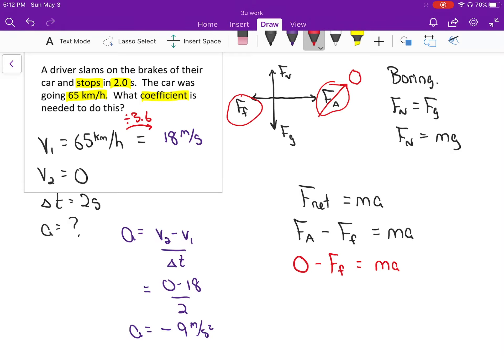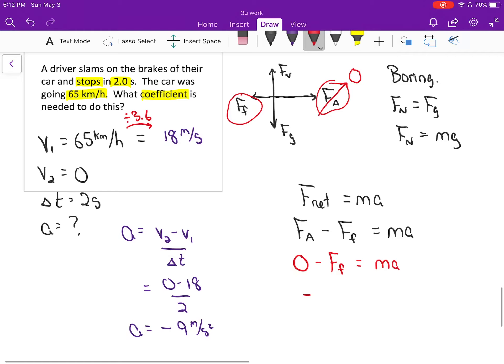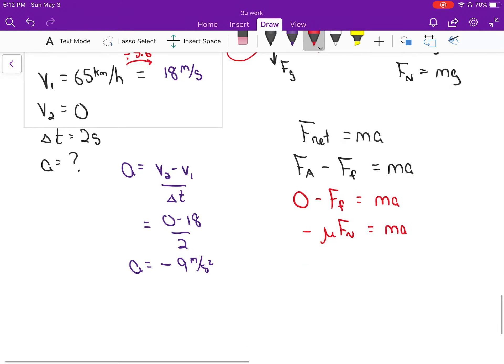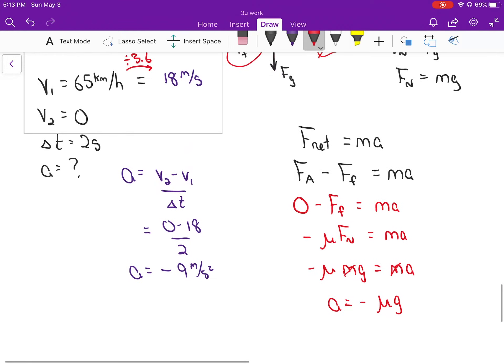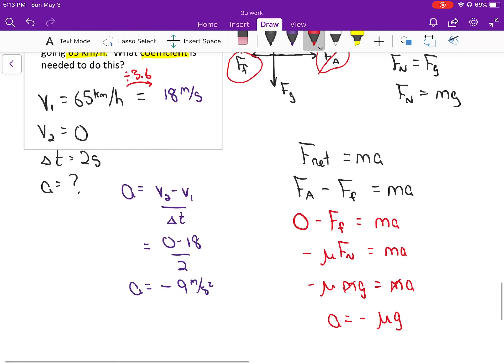So down here really this should say zero minus F_f equals ma. Really that means negative F_f is always μ times F_n, that's what's equal to ma. F_f is equal to mg this time, so minus μ mg equals ma. The m's are going to cancel. Doesn't matter how heavy the car is. We're going to get that a is equal to minus μ times g. A cool little equation. Really this is saying that how quickly a car can accelerate is the μ multiplied by 9.8.